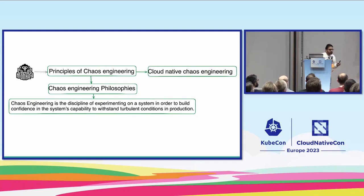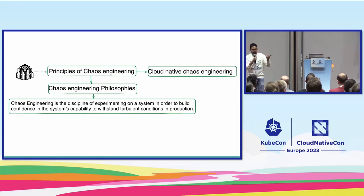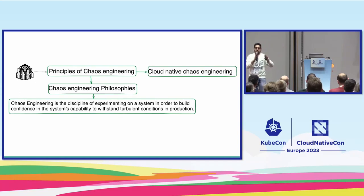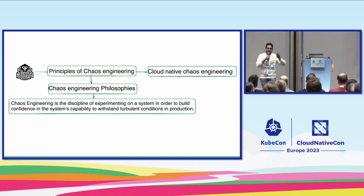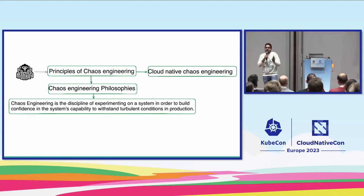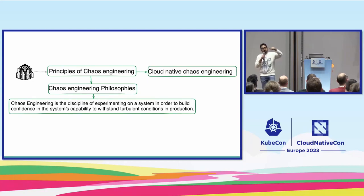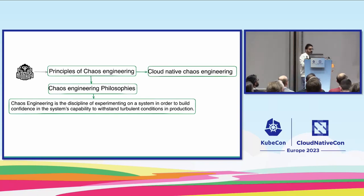Chaos engineering is not something very new. You must have heard of Chaos Monkey — Netflix originated it in 2010, so it's more than 13 years old. The technology has been maturing, and cloud native chaos engineering emerged as cloud native itself matured. Since the applications and systems have matured, so have the models and tools — that's where cloud native chaos engineering came in.